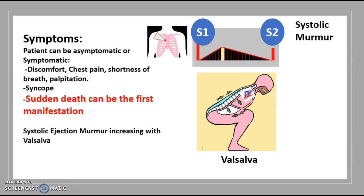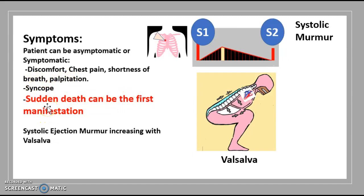The patient can either be asymptomatic or symptomatic. When symptomatic, there is discomfort, chest pain, shortness of breath, and palpitations. There is syncope, and sudden death can be the first manifestation in some cases. There is also something called systolic ejection murmur, and it increases with Valsalva.